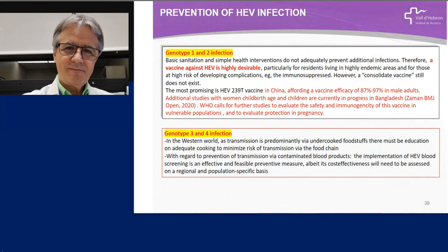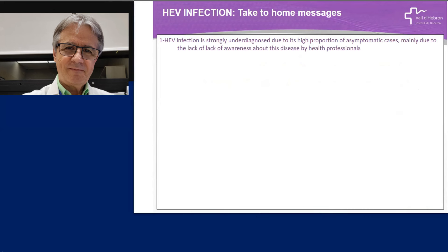Prevention differs between genotypes one and two versus genotypes three and four. For genotype one and two, basic sanitation and simple health interventions are good but not adequate for preventing additional infection. Therefore, a vaccine against hepatitis E is especially needed for residents in highly endemic areas and those at high risk for severe complications. The most promising vaccine still in use is a Chinese vaccine, with very high efficacy — but additional studies are currently in progress. For genotype three and four in the Western world, because transmission is predominantly via undercooked food, there must be education on proper cooking to minimize risk of transmission via the food chain. For prevention of transmission via contaminated blood products, the obvious best solution is general screening in blood banks.